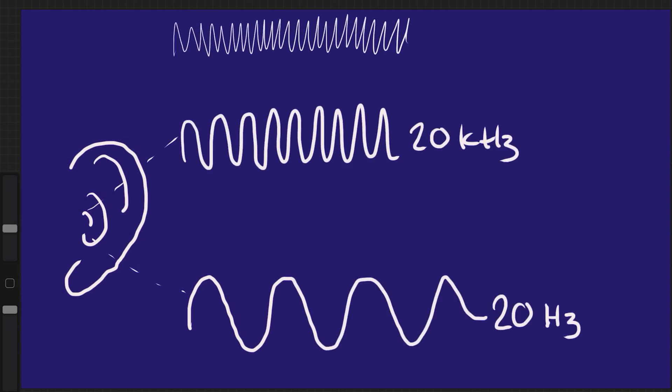As it's not sampling fast enough to record them, errors are created called aliasing, which should be heard as incorrect frequencies. So to avoid this, the analog to digital converter has a low pass filter, known as an anti-aliasing filter.